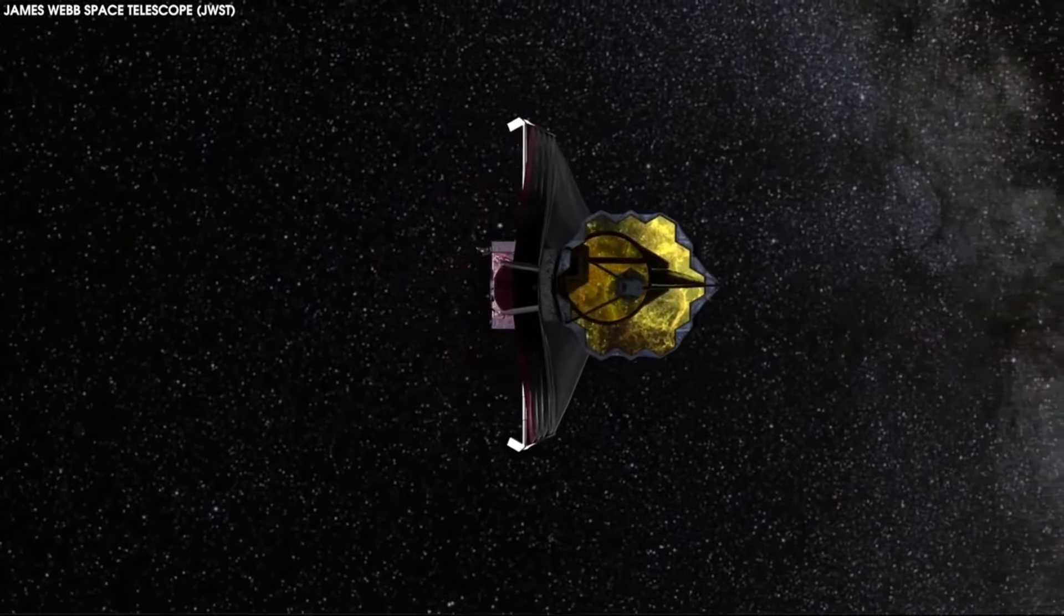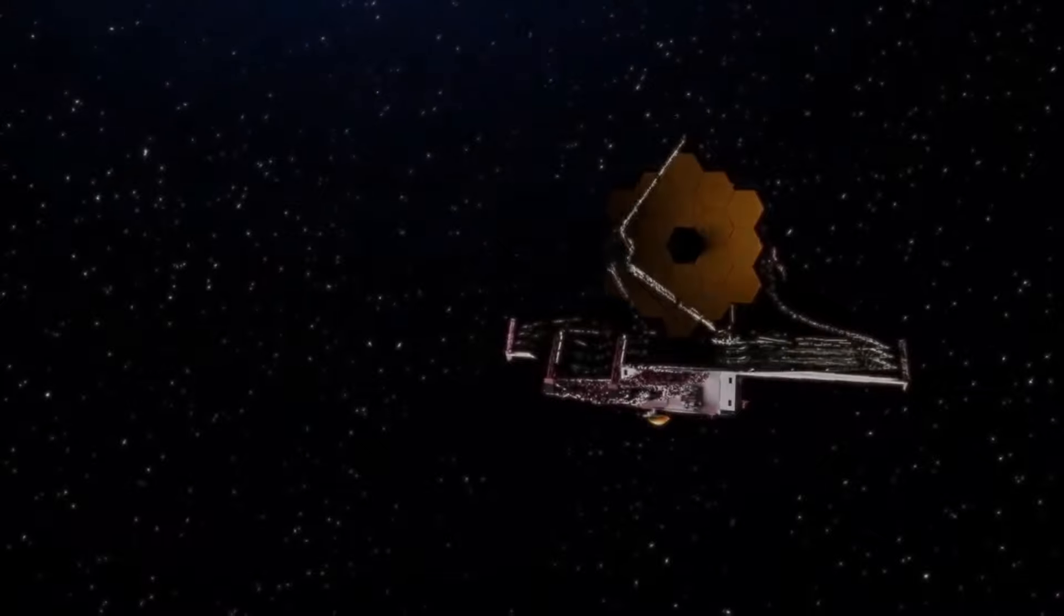The five-layer sun shield shields it from the warmth of the sun, Earth, and moon. Equipped with a sophisticated array of instruments housed in the integrated science instrument module, James Webb can provide essential functions to the telescope. The intricacies of these instruments highlight the collaborative efforts of international teams in advancing our understanding of the universe.